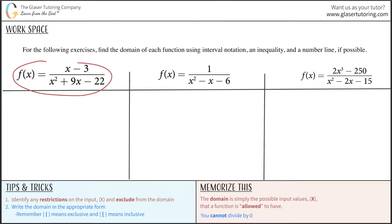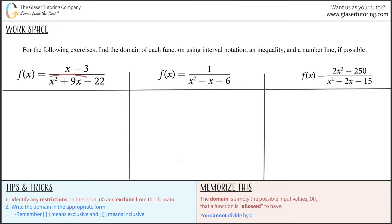When we look at the first problem, we're thinking about whether there are any restrictions on x anywhere in the function. There's really no restriction about x being in the numerator — it can take on any value it likes. But there is a restriction for x in the denominator. Regardless of the power, you cannot divide by zero. So there is a restriction here: the denominator, x squared plus 9x minus 22, cannot equal zero.